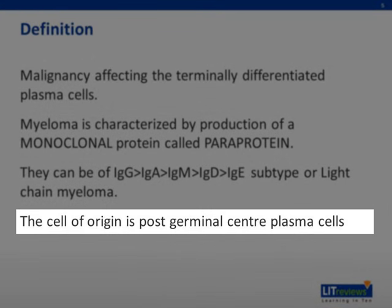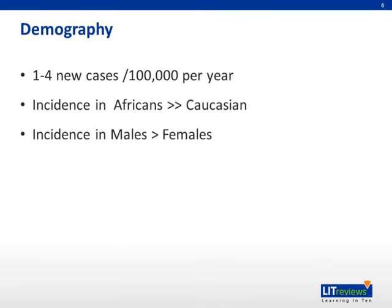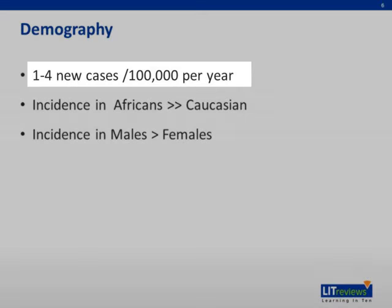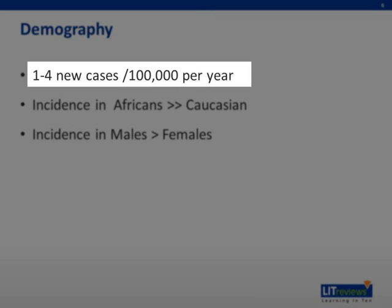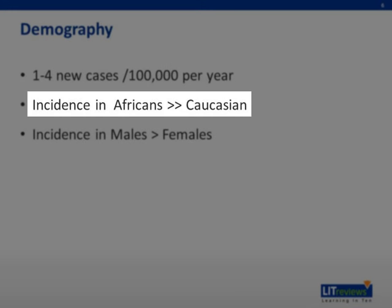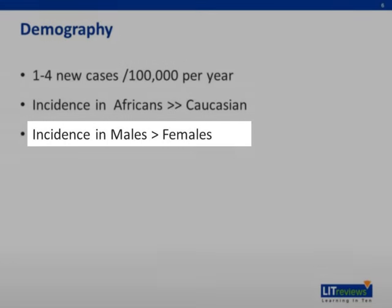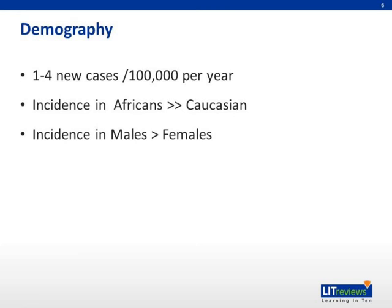The cell of origin is thought to be post-germinal center plasma cells. The incidence of new cases of myeloma is roughly one to four new cases per 100,000 per year. Incidence is higher in Africans compared to Caucasians, and commoner in males than females. Asian population is reported to have lower incidence compared to the Western population. Increasing age is related to increasing incidence of myeloma.